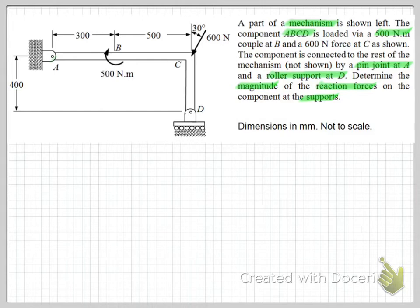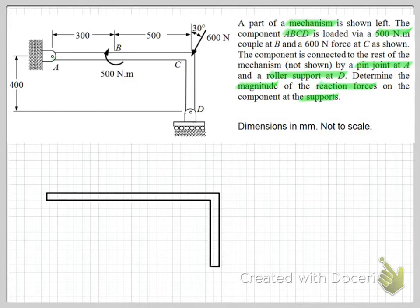So in our solution to our rigid body equilibrium problem, the first thing we do is to draw the free body diagram. That's simply a representation of the external boundaries of the component that we're analysing — in this case component A, B, C, D. So that's our drawing to represent that body.